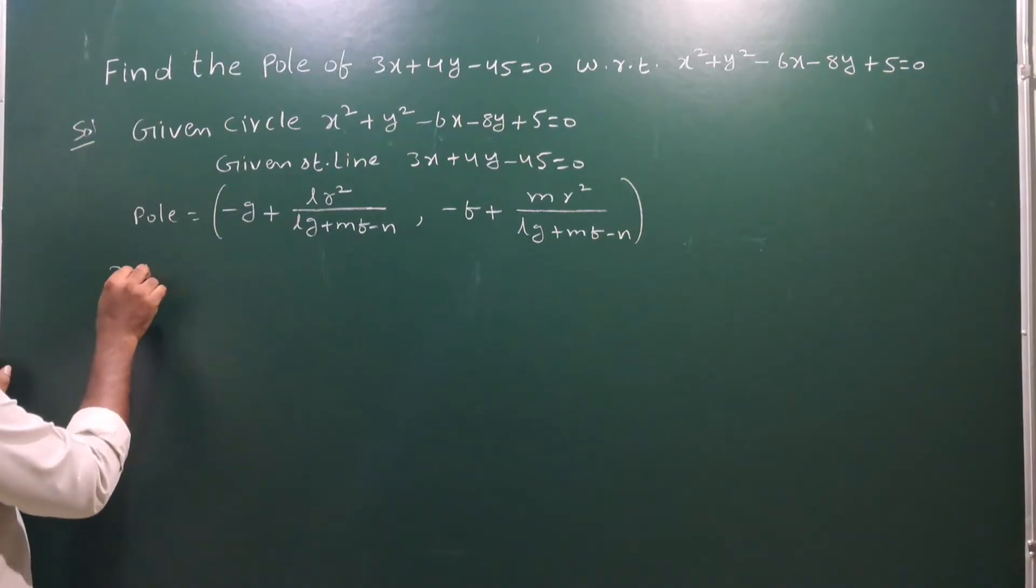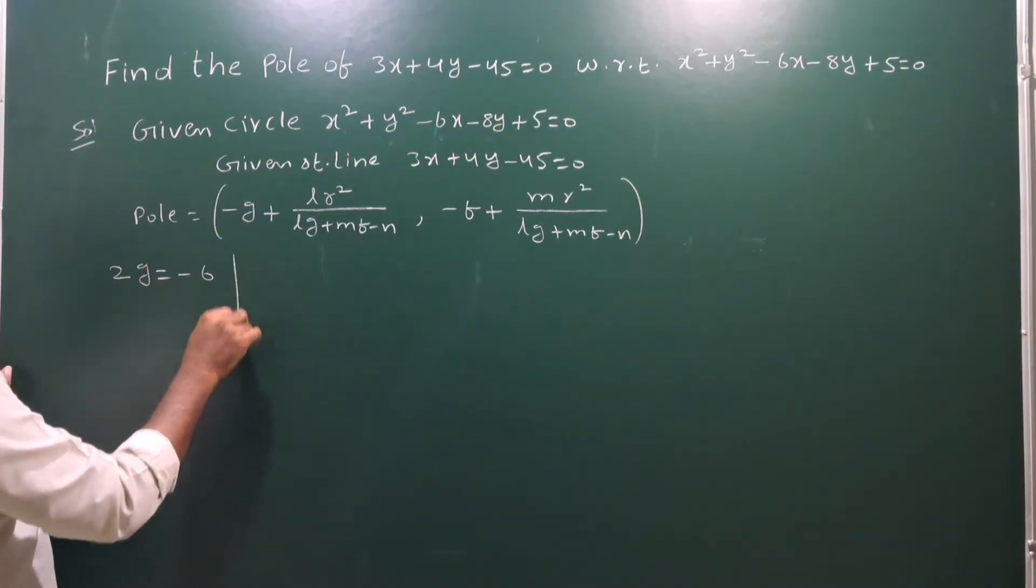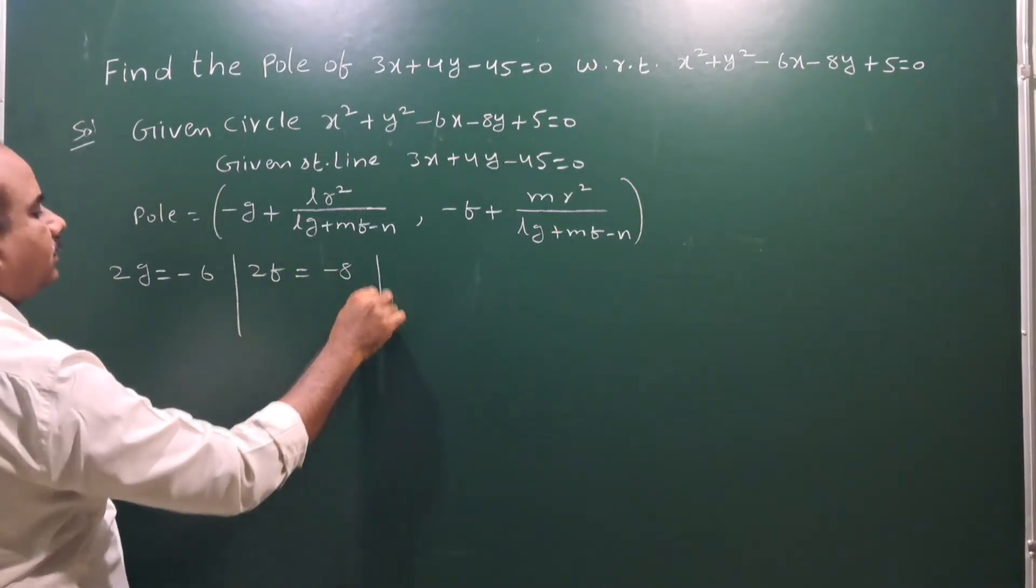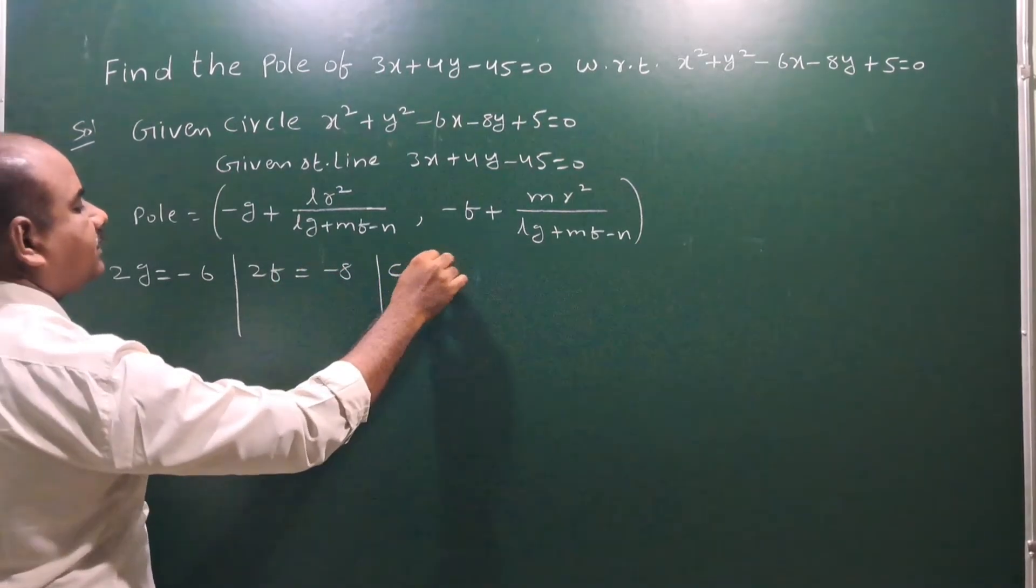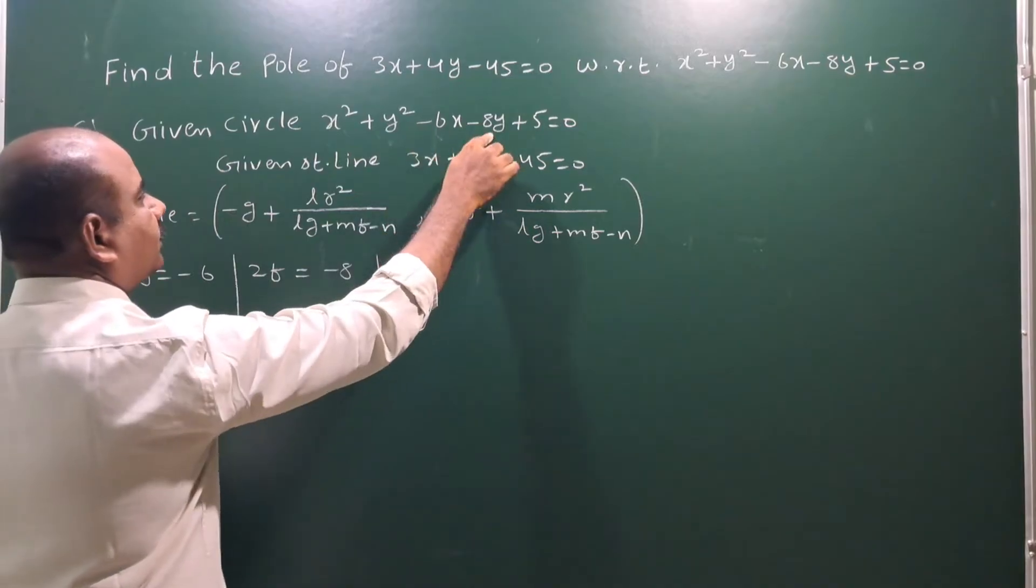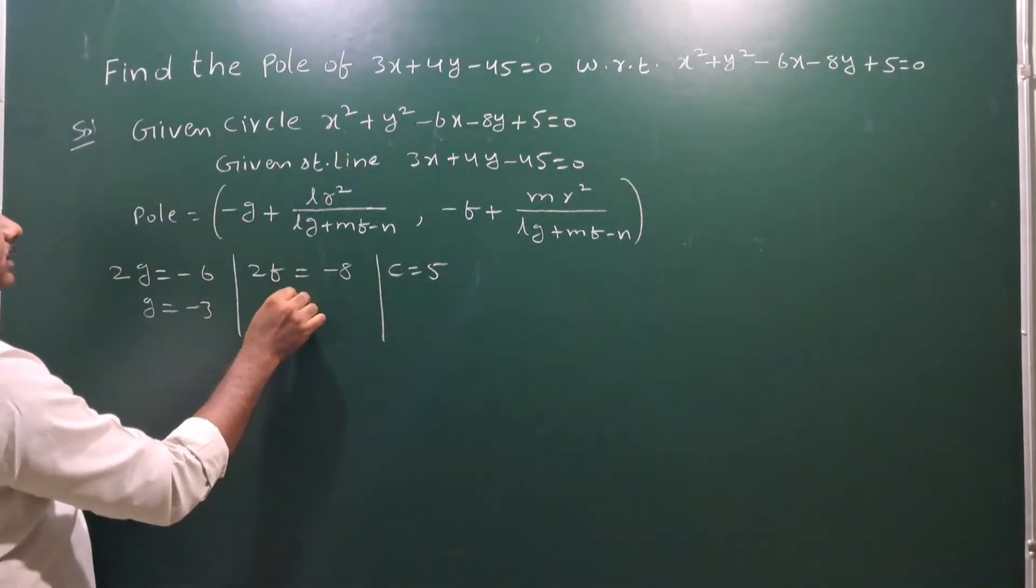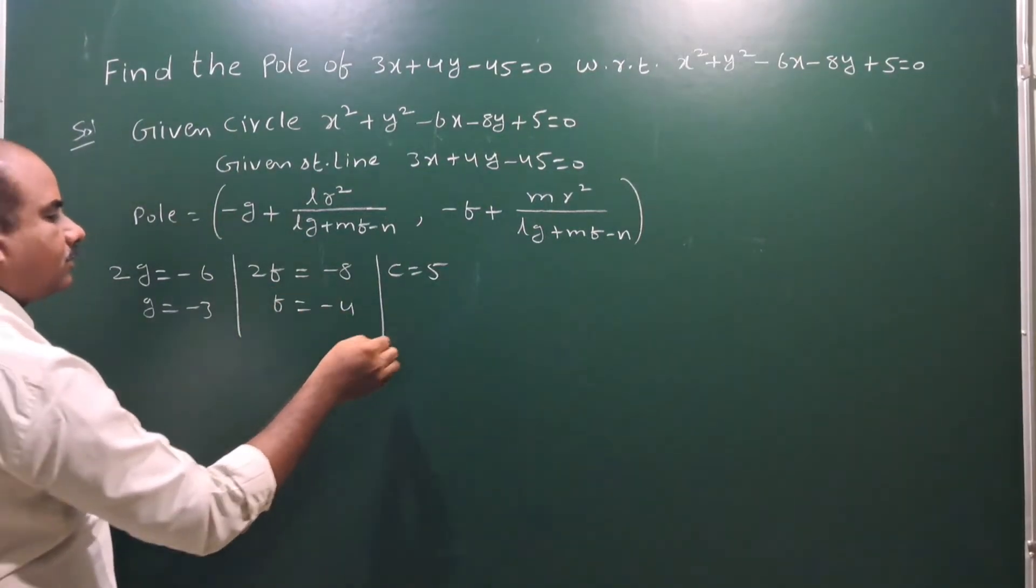So here 2g means minus 6, next 2f means minus 8, next constant c equals 5. So g equals minus 3, f equals minus 4.